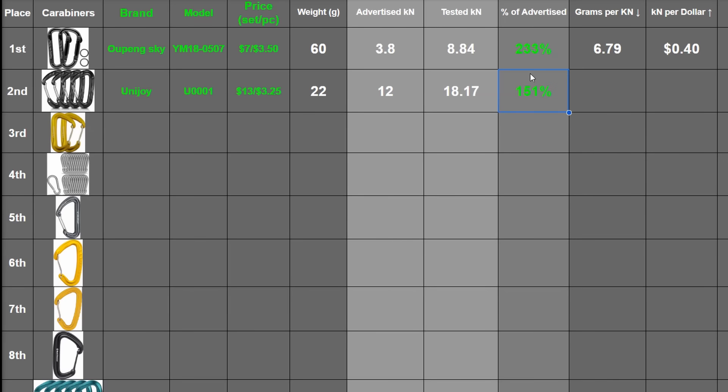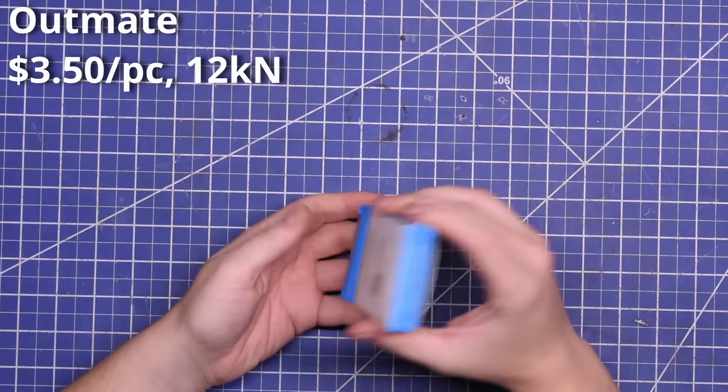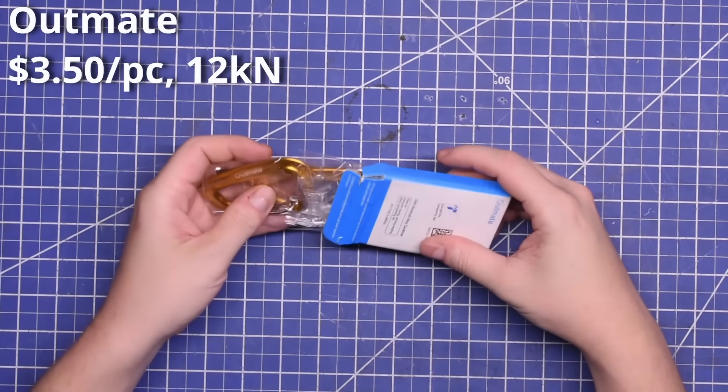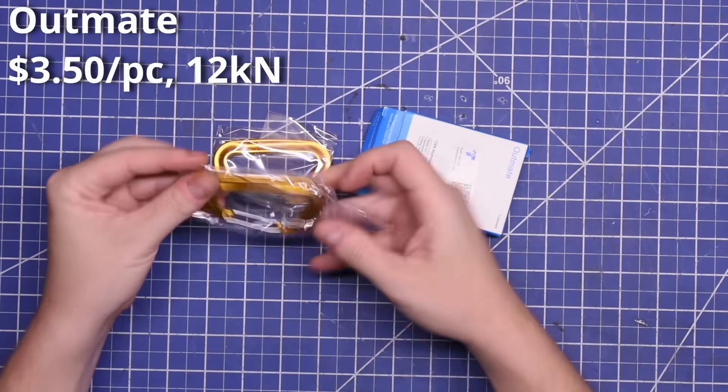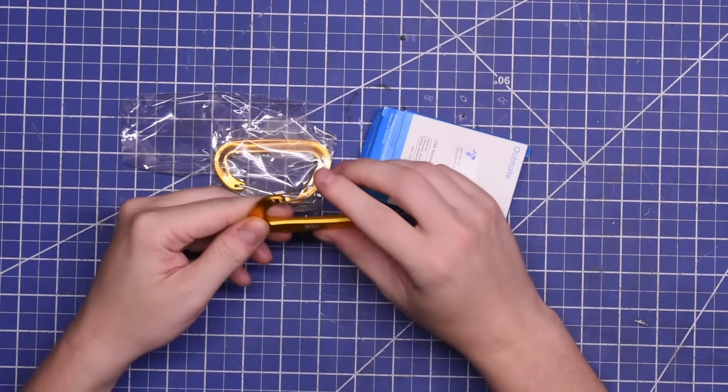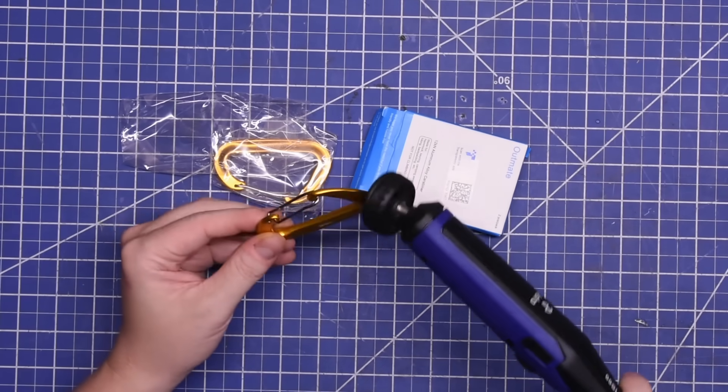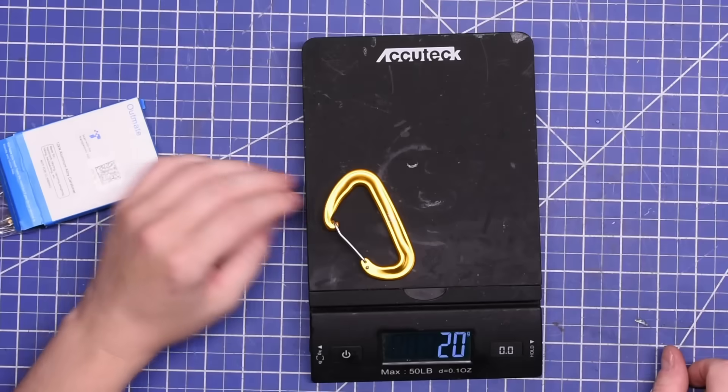151%, like a 1.51 safety factor overrated. That's incredibly good. We're talking a $3.25 carabiner here, not how I expected things to go on this side of the chart. Okay, and up next we have the last 12 kilonewtons carabiner from Amazon. It's the Outmate. It's a lot like the last one. One of these smaller than average looking aluminum carabiners with what would be an annoyingly small gate. But you can carry a whole lot of them at just 20 grams a pop and $3.50 a piece.